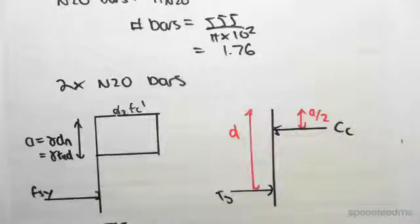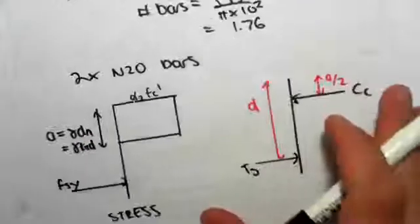So what we're going to do is verify that the steel we have said, the 2 N20 bars, is adequate. The way we do this is we let the tension in the steel equal the compression in the concrete, because we're in a pure bending case, so this equilibrium has to exist.